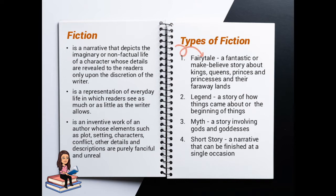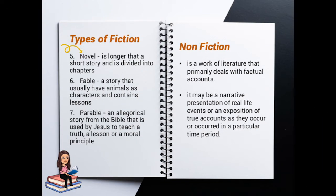Here are the different types of fiction. Number 1, fairy tale — a fantastic or make-believe story about kings, queens, princes, and princesses and their faraway lands. Number 2, legend — a story of how things came about or about the beginning of things. Number 3, myth — a story involving gods and goddesses. Number 4, short story — a narrative that can be finished at a single occasion. Number 5, novel — longer than a short story and divided into chapters. Number 6, fable — a story that usually has animals as characters and contains lessons. And number 7, parable — an allegorical story from the Bible used by Jesus to teach a truth, a lesson, or a moral principle.